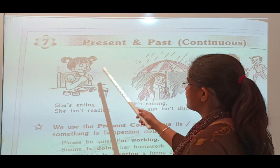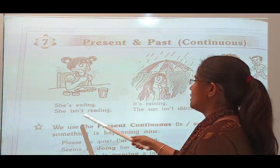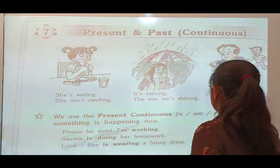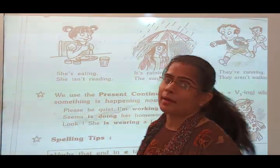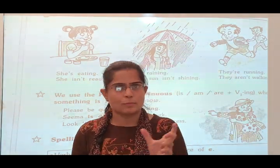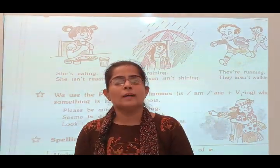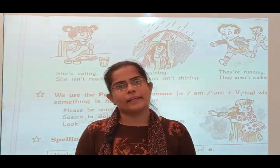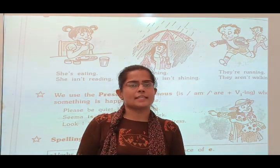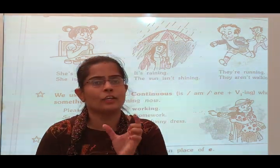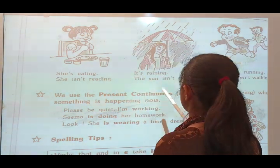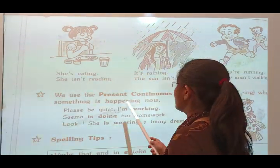Here are some pictures of a girl. She is eating, she isn't ready. We use present continuous tense. We use is/am/are plus verb-ing. Here is the syntax of present continuous tense: Subject plus is/am/are plus verb-ing and then object. According to the subject you can put 'is', 'am', or 'are', and here we use the verb-ing form.